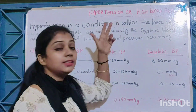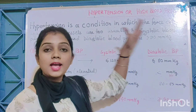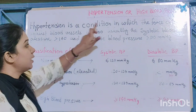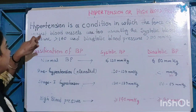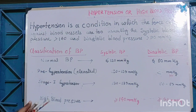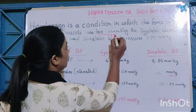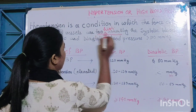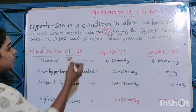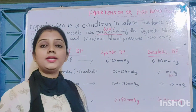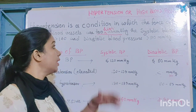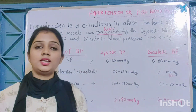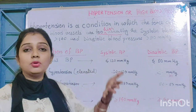If we define hypertension or high blood pressure, the definition will be: hypertension is a condition in which the force of blood against blood vessels is too high — that is, when our body's blood pressure goes higher than normal.